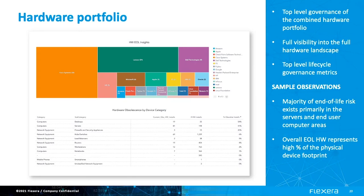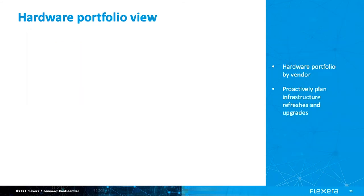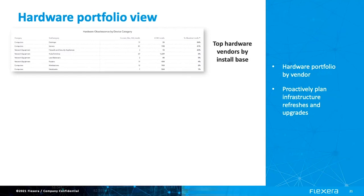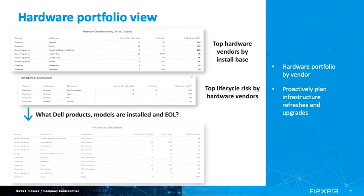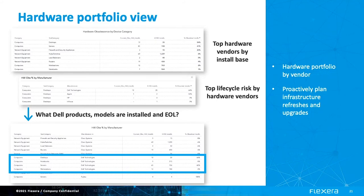Here we can see a holistic view of the entire hardware portfolio and how it relates to end of life. Manufacturers, categories, subcategories, and products among other attributes are available to understand where complexity and risk exists. The majority of end-of-life risk exists primarily in the servers and end-user computing areas, and overall, end-of-life hardware represents a high percentage of our physical device footprint. You can see hardware vendors by number of installs and dive further into vendors with the most end-of-life or end-of-support devices to effectively mitigate that risk through planning for upgrades and refreshes to aging infrastructure.